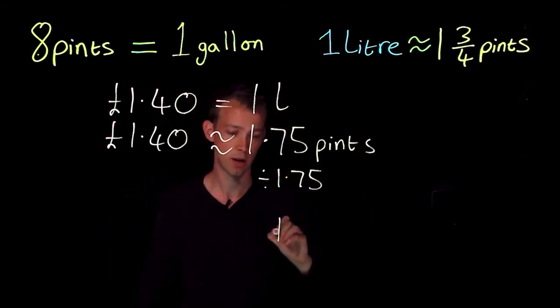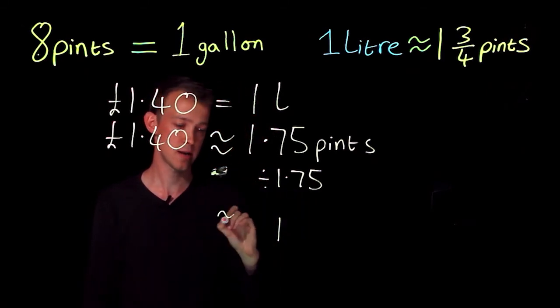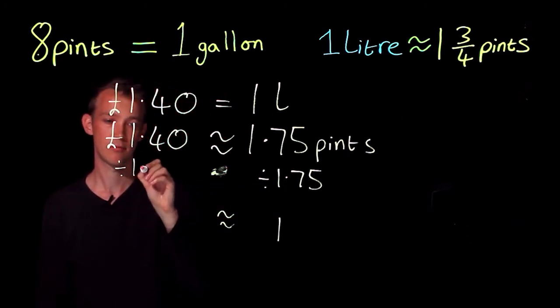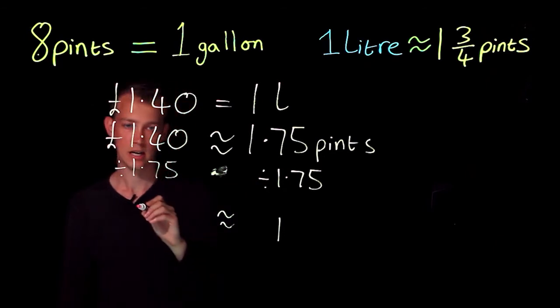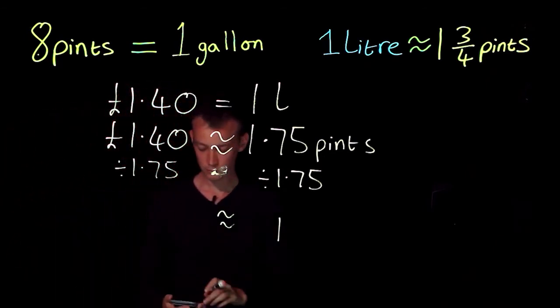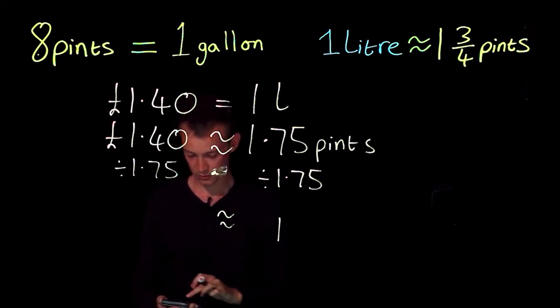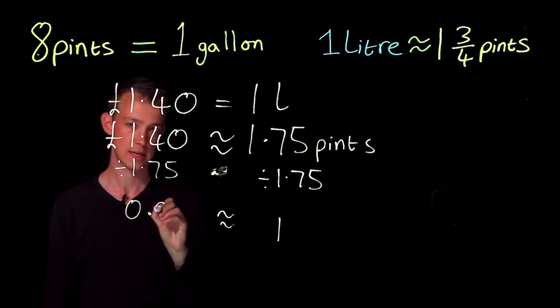If I divide this side by 1.75 I'm left with one, that's why I'm doing that. I've got my approximate equal sign down here, divided by 1.75. So on my calculator I'll be doing 1.4 divided by 1.75, which is going to give you 0.8.